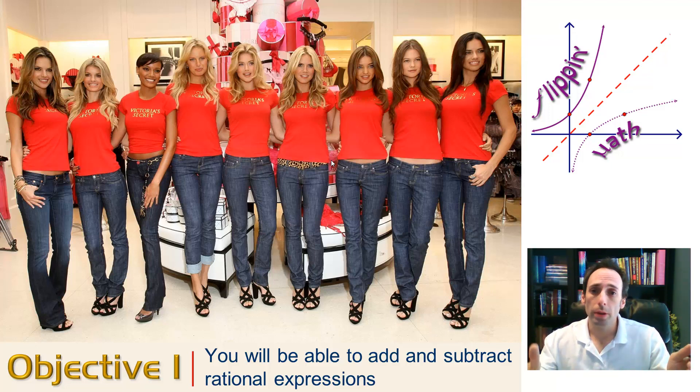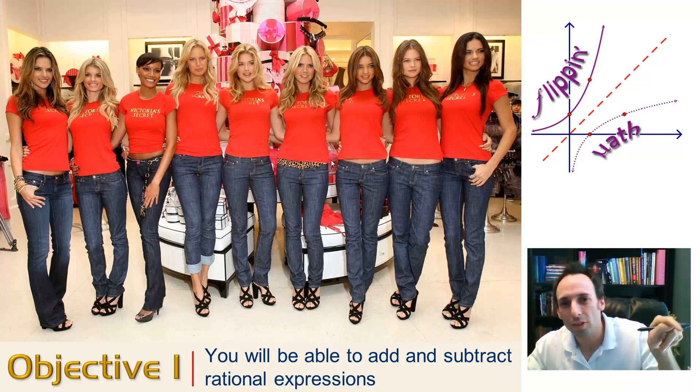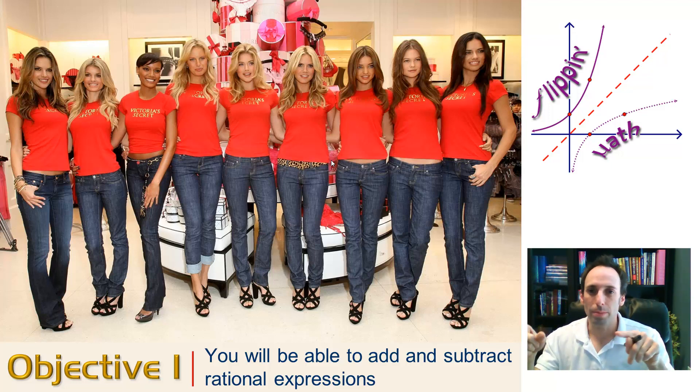Take a look at this picture. You might be going, why are there a whole bunch of lovely ladies on this slide? Well, it's because you can see that every single one of them has the same thing on the bottom. They have the same pair of jeans and they have the same shirt. They have common denominators. So all we'd have to do if we wanted to add up those ladies is keep the shirt and the pants the same and just add up their heads.